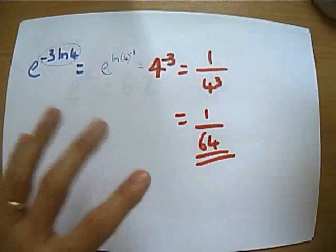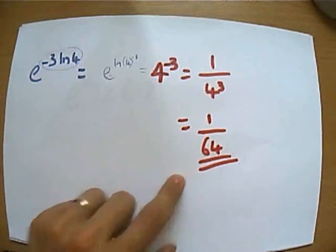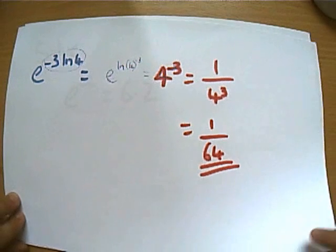And 4 cubed is 64, so this is just hopefully a recap of all the powers and indices and log stuff you did back in either core 1 if it's power stuff, or for log stuff core 2. So let's start playing about with it.